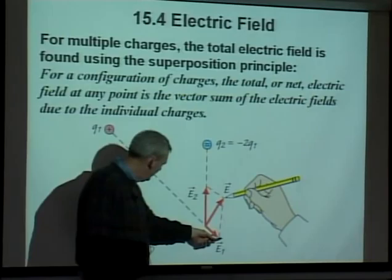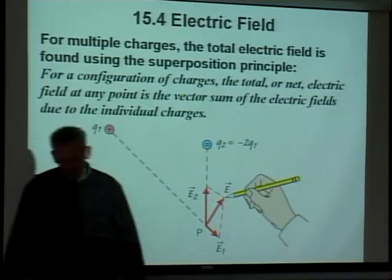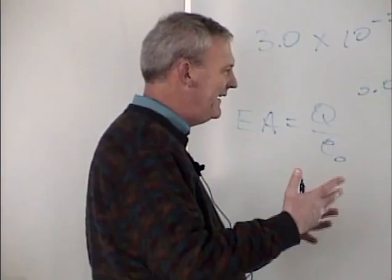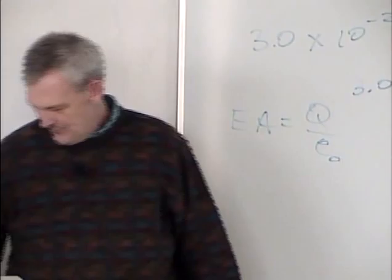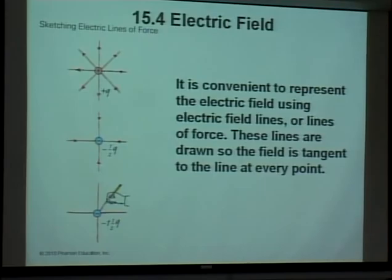Superposition just means you add up all the vector sums — that's all it means. If I've got two negative charges and one positive charge of the same magnitude, this electric field wants to go this way, this one pushes that way, and the resulting electric field is the vector sum. You've got to use x-y coordinates — there's no way to avoid it.